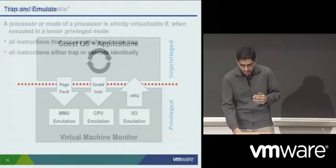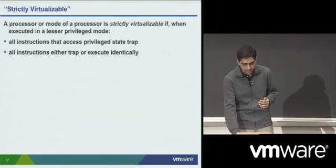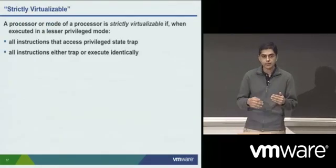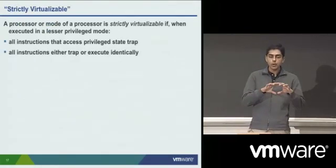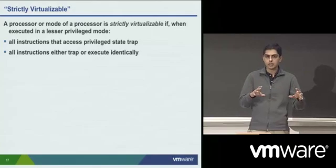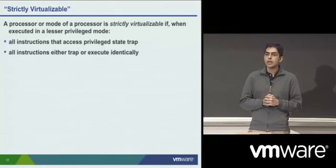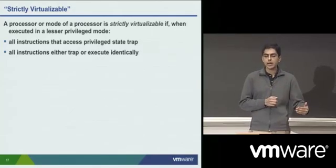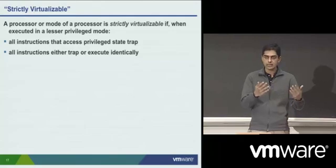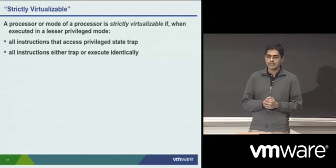The advantage of the trap and emulate model is, of course, that most of the virtual machine's instructions would actually run directly on top of the hardware, except for these what we call sensitive instructions.